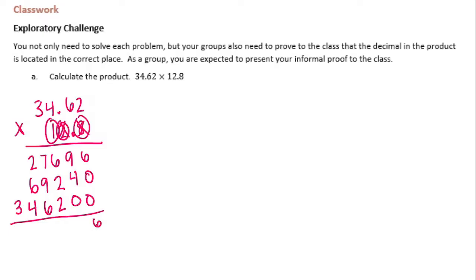Add it together: nine plus four is thirteen, carry the one. One plus six is seven, plus two is nine, plus two is eleven — seven, carry the one. One plus seven is eight, plus nine is seventeen. Seventeen plus six would be twenty-three, carry the two. Two plus two is four, plus six is ten, plus four is fourteen, carry the one. And one plus three is four.